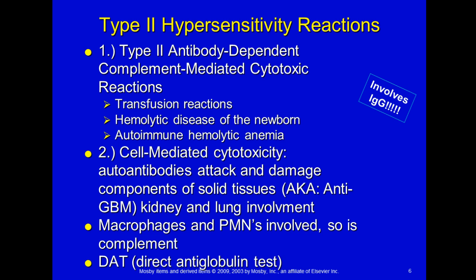Type 2 hypersensitivity is called antibody-dependent, complement-mediated cytotoxic reactions. It involves IgG and includes transfusion reactions (wrong blood type or allergy to proteins), hemolytic disease of the newborn, and autoimmune hemolytic anemia. It is cell-mediated toxicity: autoantibodies attack components of solid tissue such as the anti-glomerular basement membrane, causing kidney damage and sometimes lung involvement. Macrophages, polymorphonuclear cells, and complement are involved. A direct anti-globulin test checks for antibodies coating your cells.